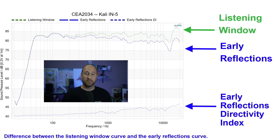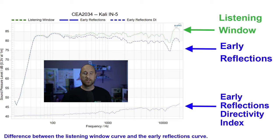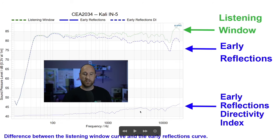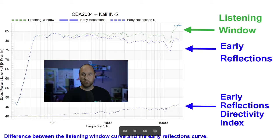Generally speaking, when I'm looking at data, what I really care about is the early reflections directivity index shown at the bottom. Regarding sound power, you want those lines to be smooth and well-controlled — that's always the case. The thing that really comes into play in terms of preference is how narrow or how sharp a slope you have with these lines. For instance, if you were to draw a line from 200 Hz to 10 kHz, any deviation from that line would be a point of potential error.